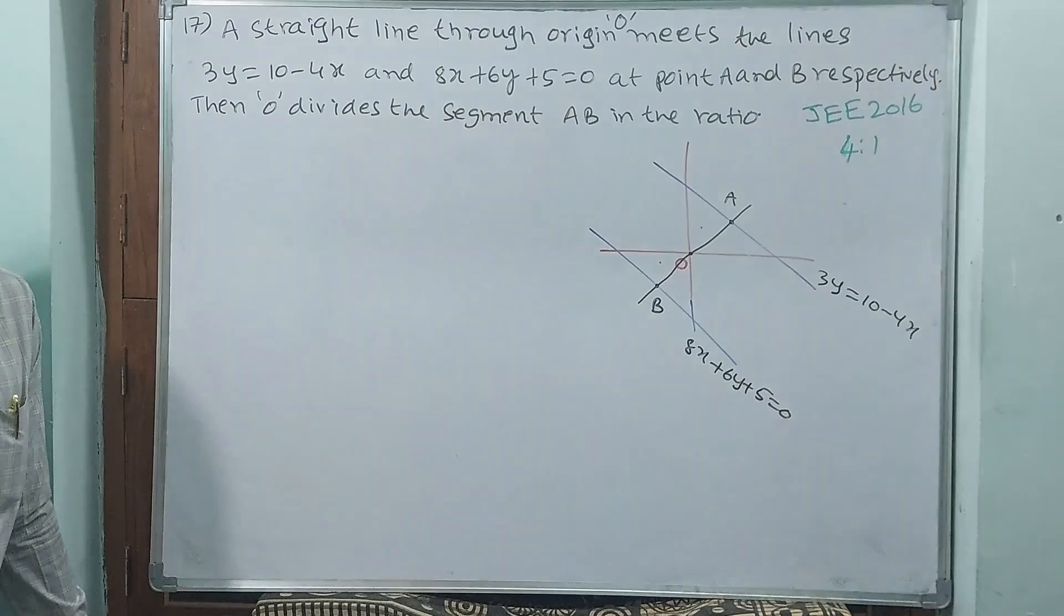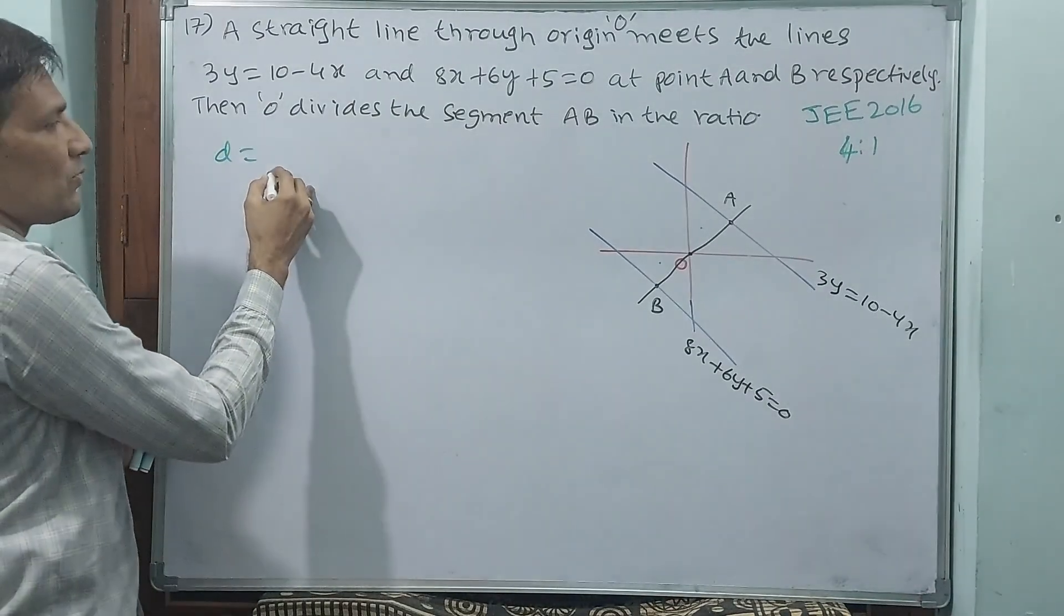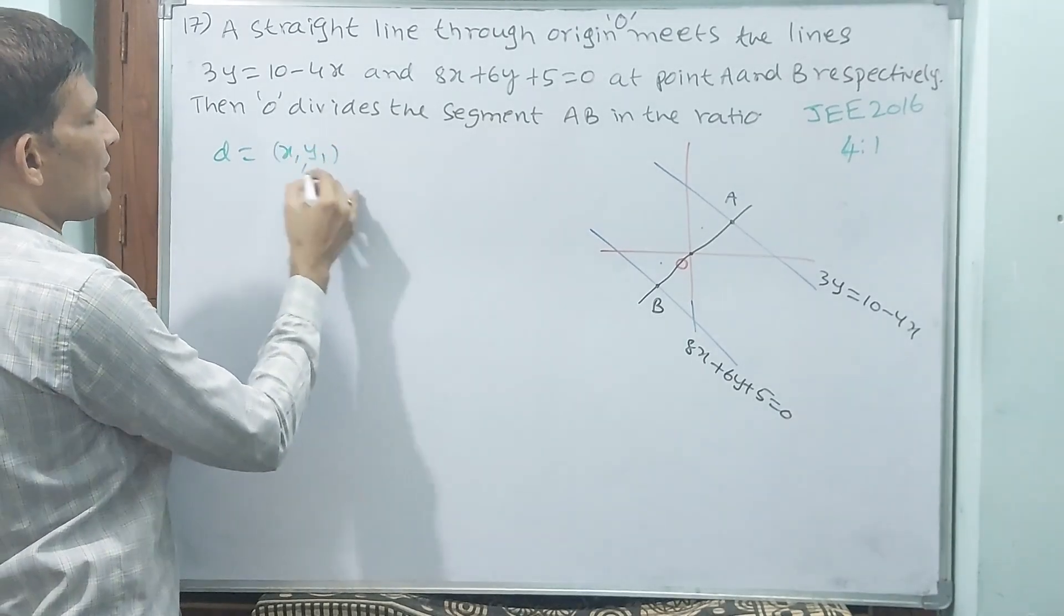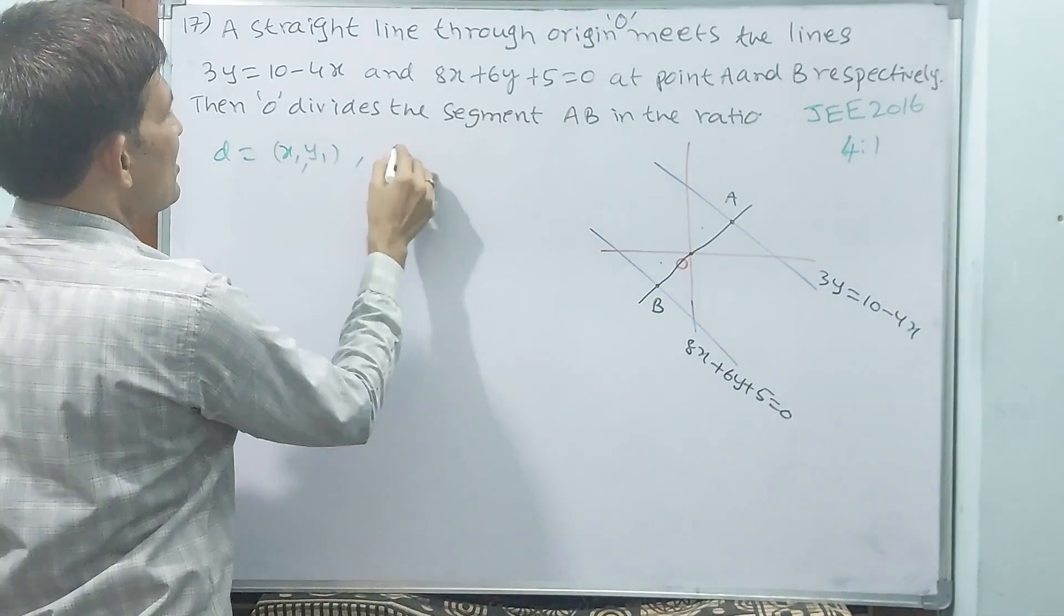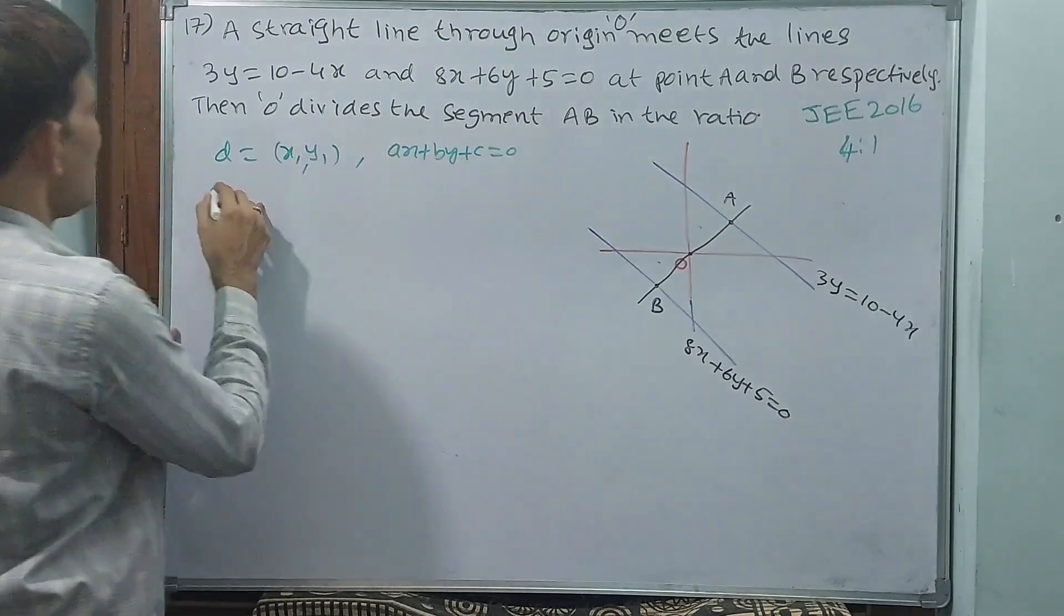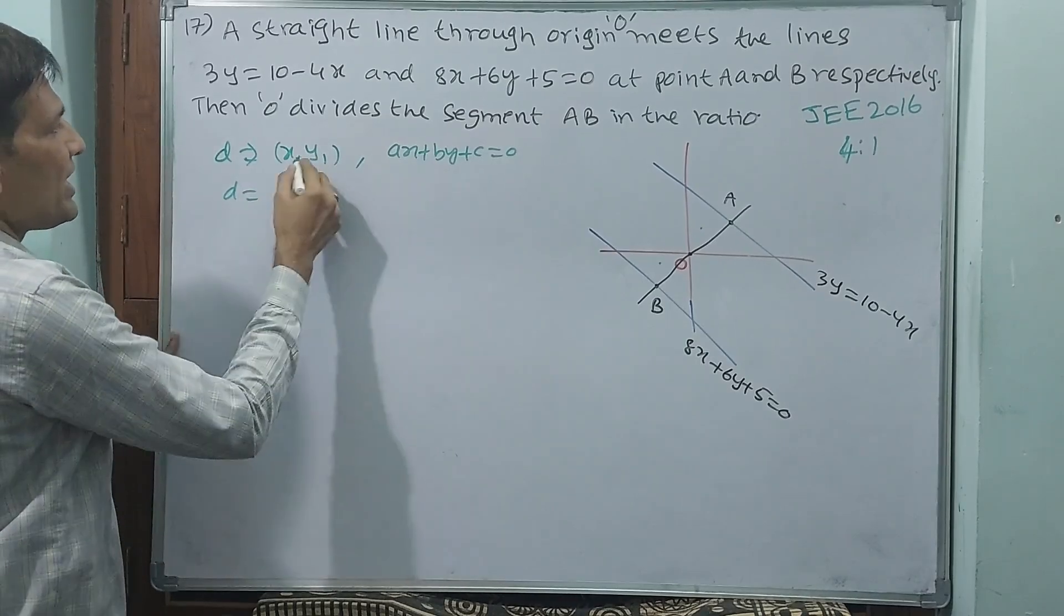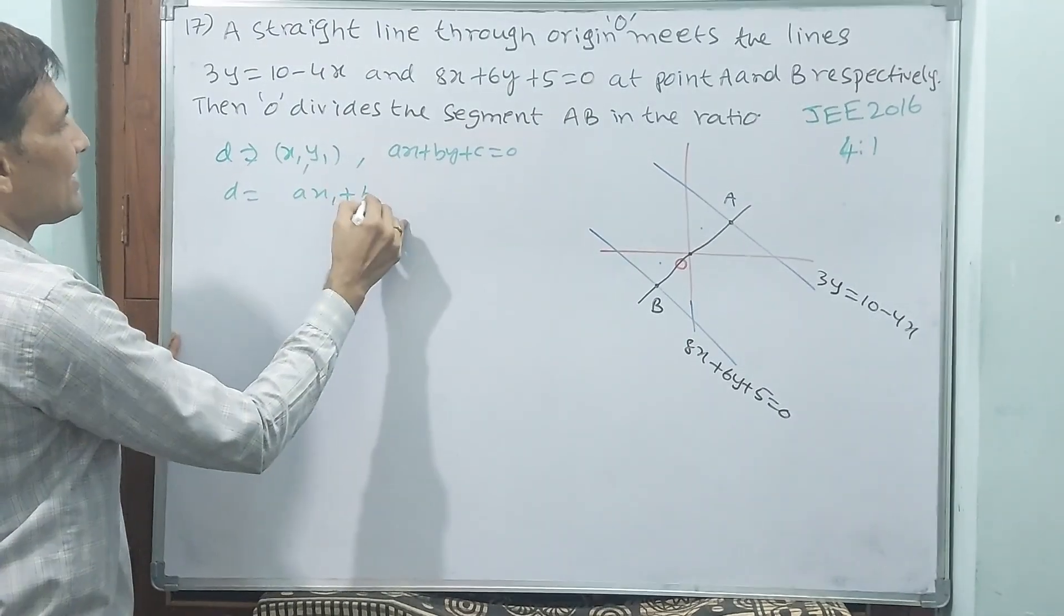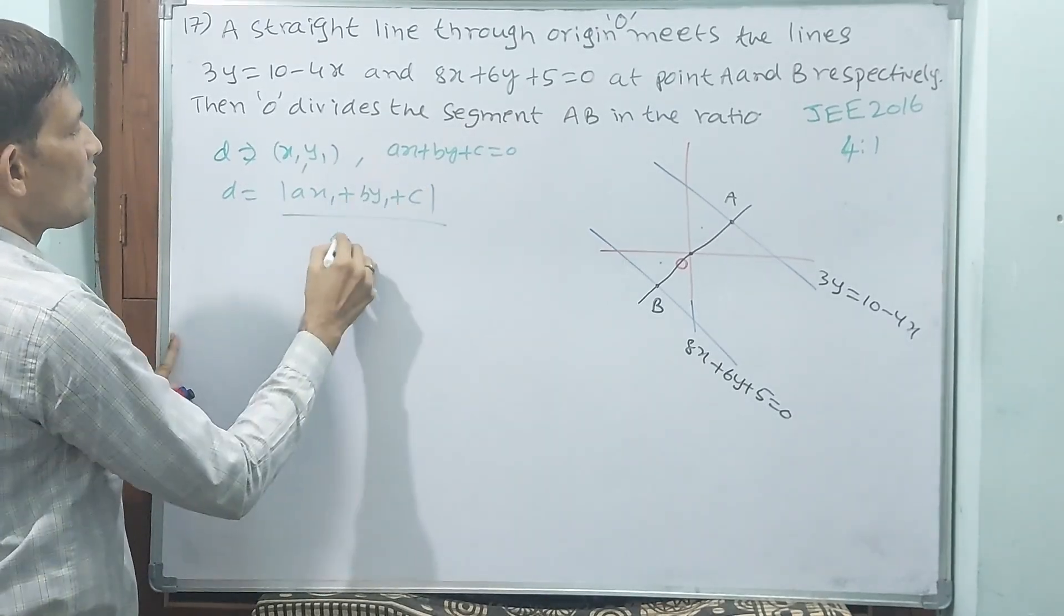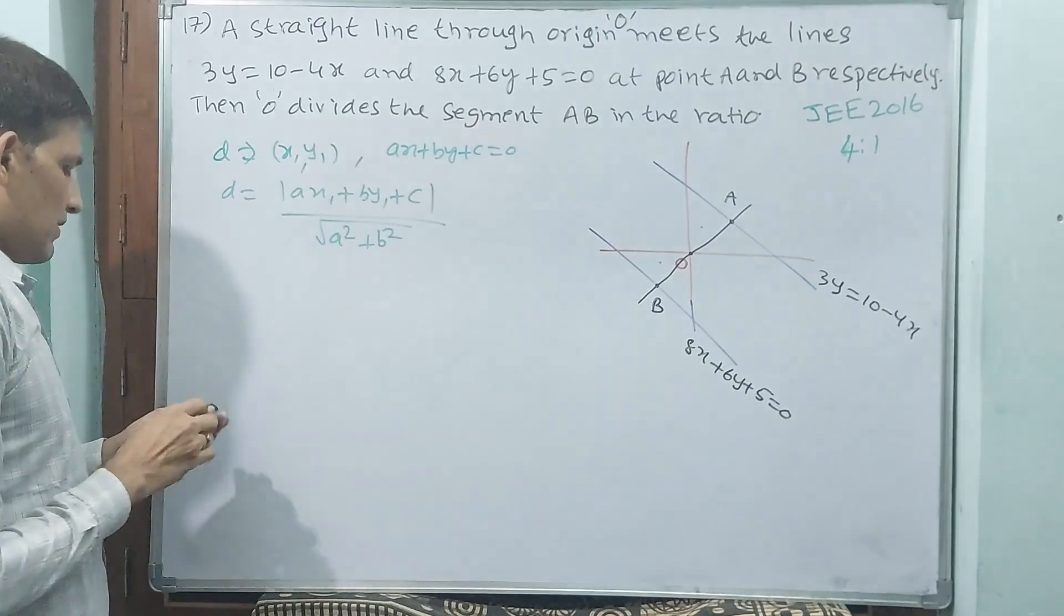From origin to line, we have the distance formula. The distance formula is D = |ax₁ + by₁ + c| / √(a² + b²), where the origin is at (x₁, y₁) and the line equation is ax + by + c = 0. This is the formula.